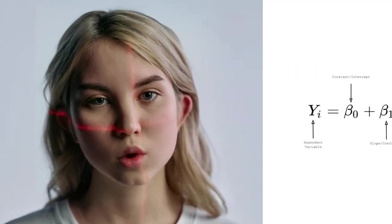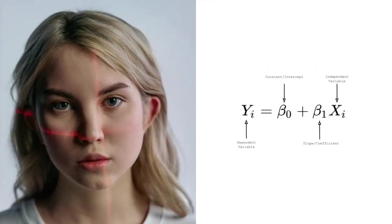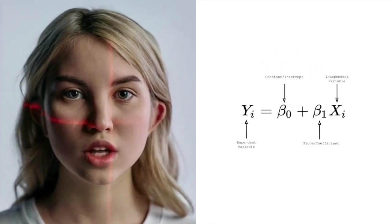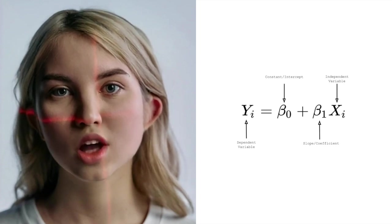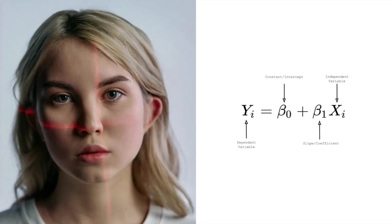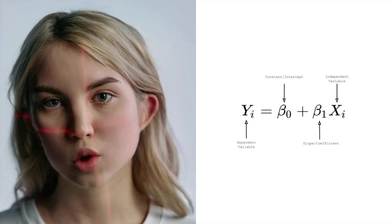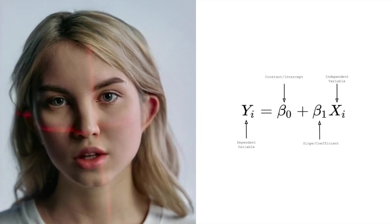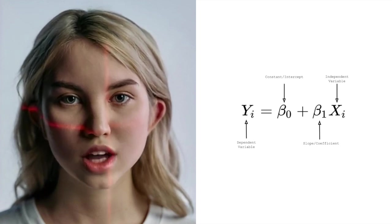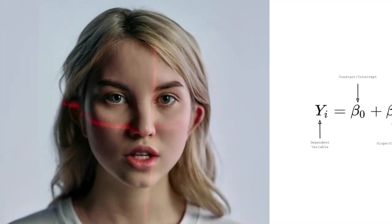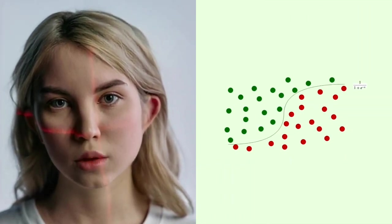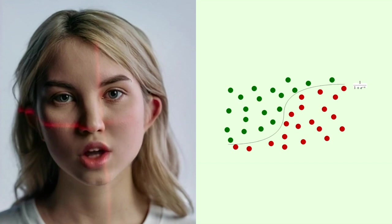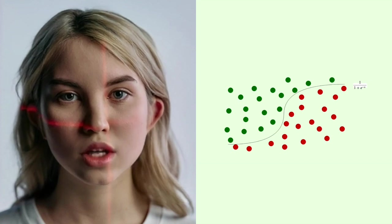Take linear regression, for example. It assumes a linear relationship between input features and the target variable. The model's parameters, or coefficients, determine the slope and intercept of the line that best fits the data. Similarly, logistic regression employs coefficients to estimate the probability of belonging to a specific class.